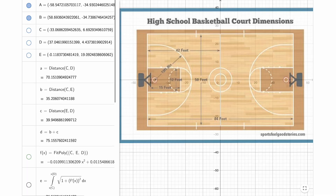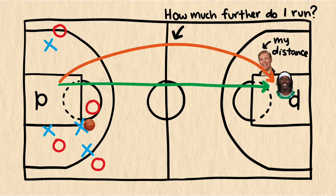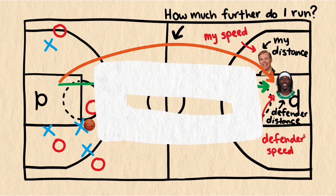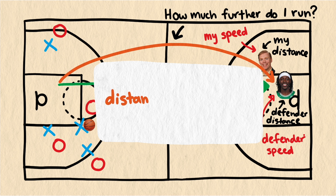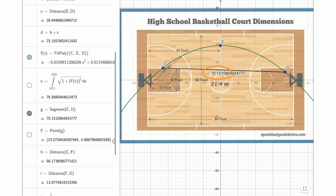Back to our fast break situation. We will model my path as a parabola, and I can have GeoGebra find the parabola that goes through these three points. I've scaled the court so that units are feet, but we will put up the metric measurements on the screen as well while we work. To answer our question, we need information about the distance that I run and my defender runs. The distance my defender runs is easy to calculate, and GeoGebra can do that for us. The distance is about 70.2 feet, or 21.4 meters.